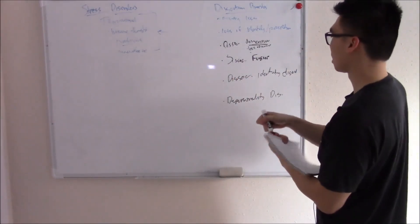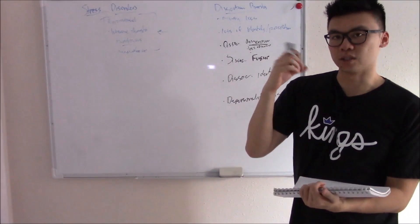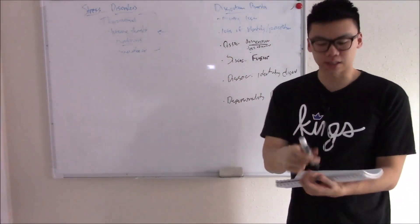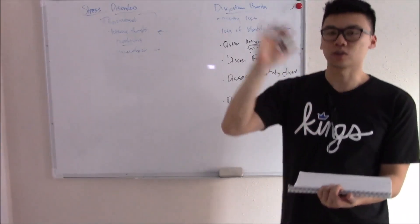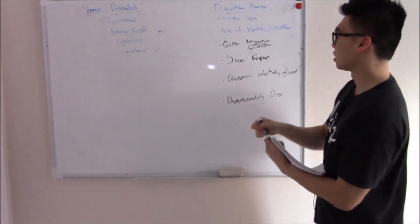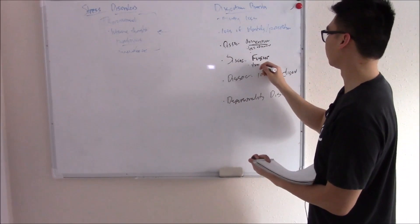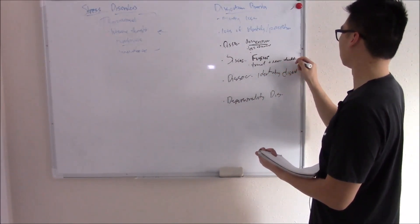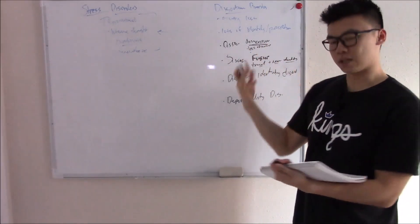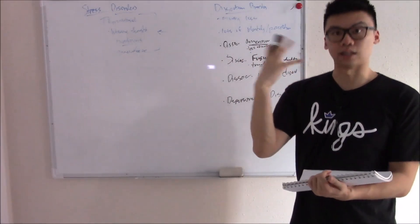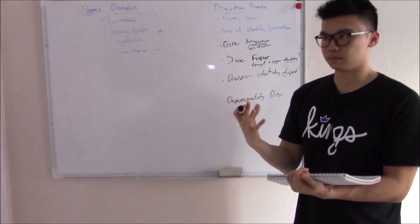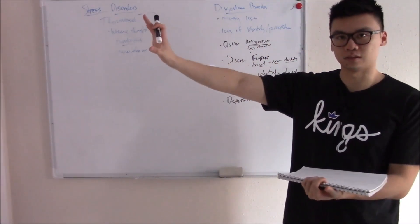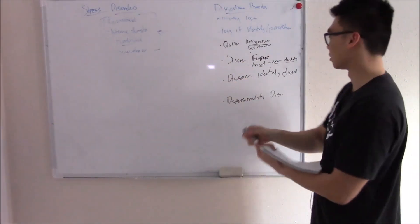Dissociative fugue is when you have that amnesia, you lose sense of who you are, and you actually travel somewhere else and assume a new identity. So it'd be like if I just went to Oklahoma and assumed a new identity. Travel plus new identity. And like amnesia, fortunately they spontaneously resolve. They'll just pick up and go back home. In fact, they'll forget all about this episode. They won't even register it.